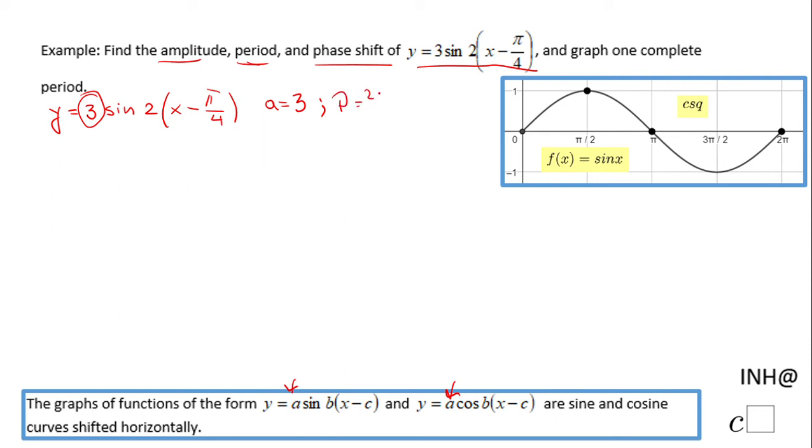Now for the period: it's 2π over b. The b is the number in front of the parenthesis—you need to be sure you have x minus something. In this case, b is 2, so we have 2π over 2, which equals π. That's the period.